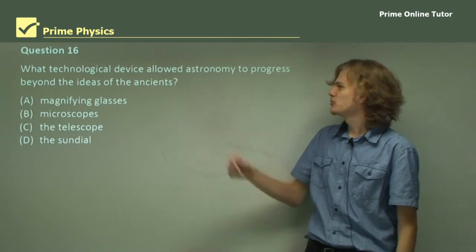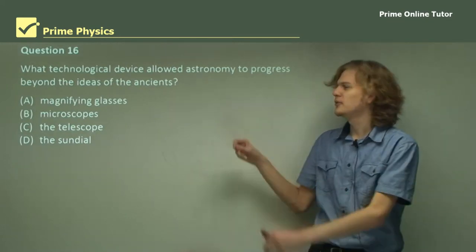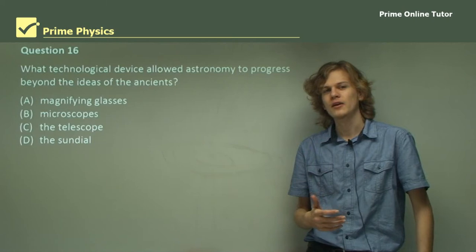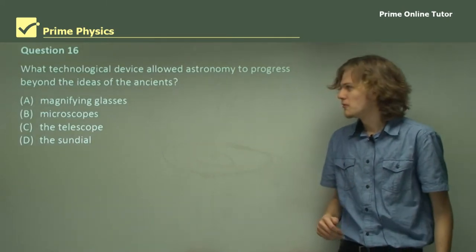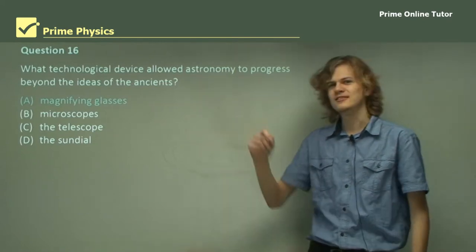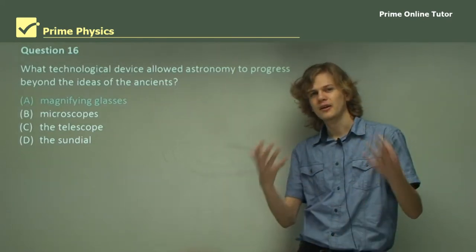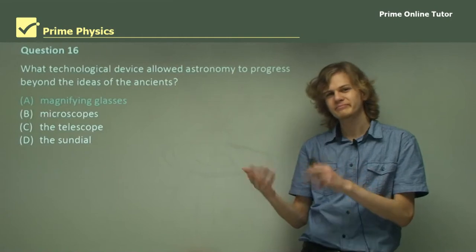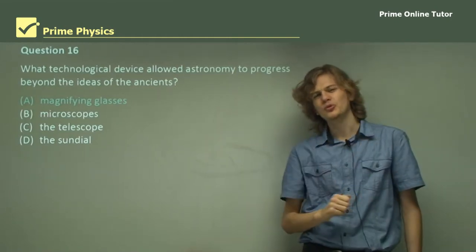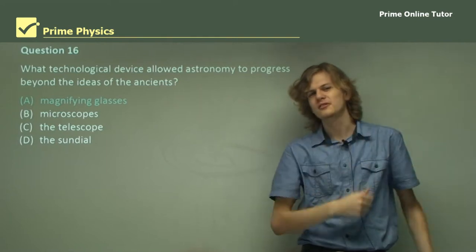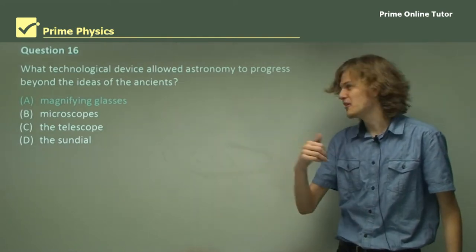Question 16. What technological device allowed astronomy to progress beyond the ideas of the ancients? That is, people like the ancient Greeks. So we have a few options here. Let's go through them. The magnifying glass. This is a utility of lenses, which of course would be helpful. Except if you're looking at the sky, a magnifying glass won't really help because the distances involved are wrong. So it's not magnifying glasses.